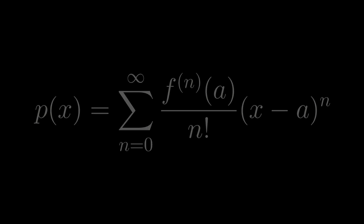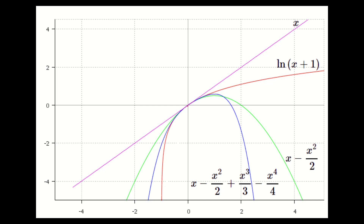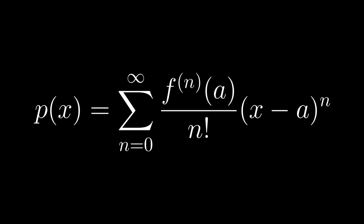For most functions, as n approaches infinity, p will converge exactly into that function. There are some functions, such as the natural log of x, which only have a finite radius of convergence for their Taylor series. This is because their derivatives simply do not carry enough information for the Taylor series to continue converging after a certain bound. But other than that, Taylor series are some of the most powerful approximation tools available to us, used in essentially all STEM-related fields to get very accurate approximations. Thank you for watching — I hope you found this video helpful.